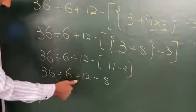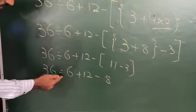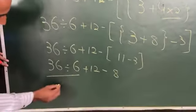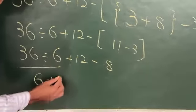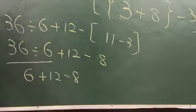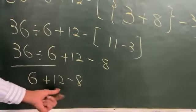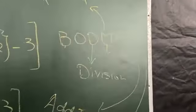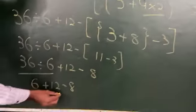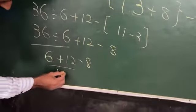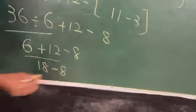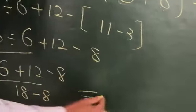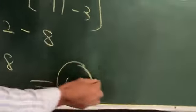Now we are having more operations: division, plus, and minus. We eliminate the long bracket: 36 divided by 6 equals 6, plus 12 minus 8. We now have addition and subtraction. In BODMAS, addition comes first, so 6 plus 12 equals 18, minus 8. Then 18 minus 8 equals 10. This is our answer.